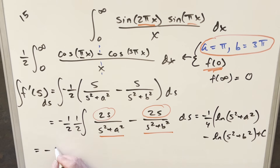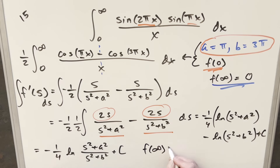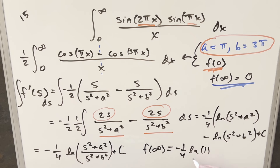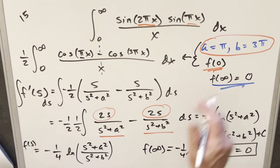Now we use our initial condition. As s → ∞, the ratio (s² + a²)/(s² + b²) → 1, so ln(1) = 0, and we need f(∞) = 0. This means -1/4 · 0 + C = 0, so C = 0. We can drop the constant and we have our expression for f(s).